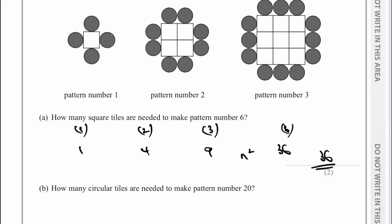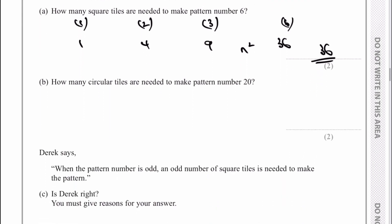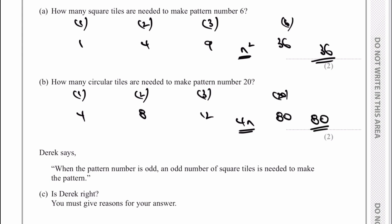Let's move on to part B — how many circular tiles? Pattern 1 has 4 circular tiles, pattern 2 has 8, pattern 3 has 12. So what we're actually doing is multiplying the pattern by 4, so it's 4n. Rather than n squared, it's now 4 times the number of the pattern. So if the pattern number is 20, the number of tiles is going to be 80 — and 80 would be the answer to part B.